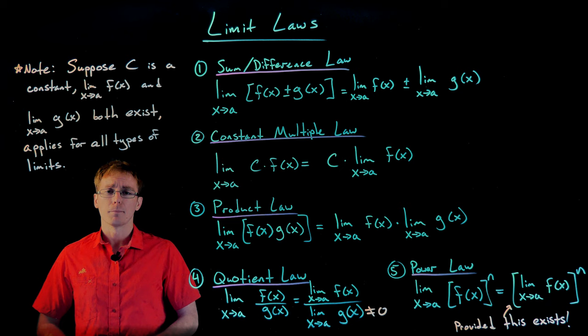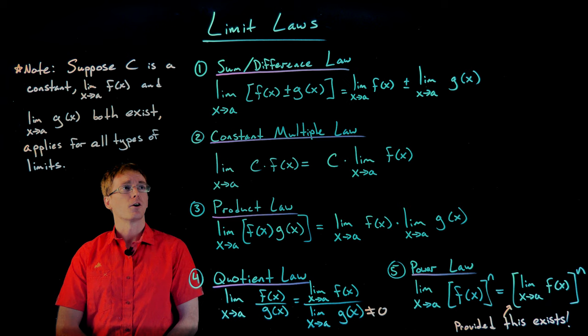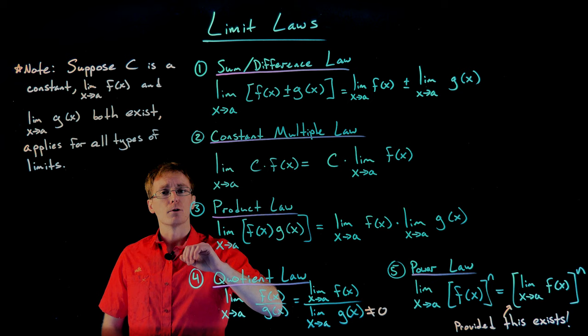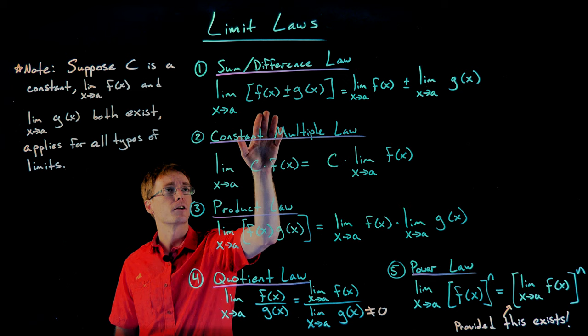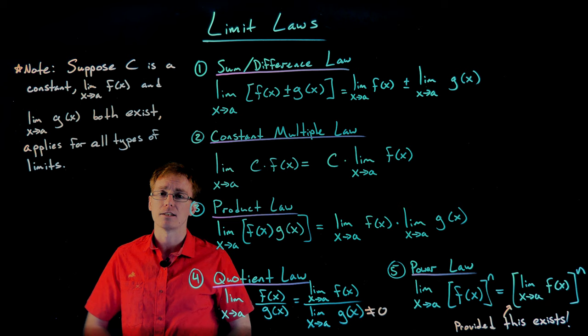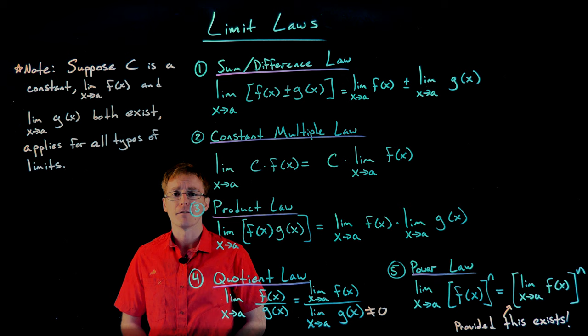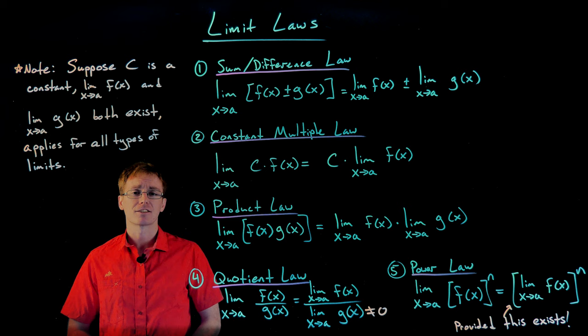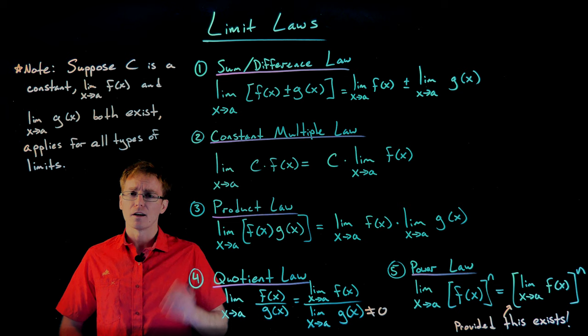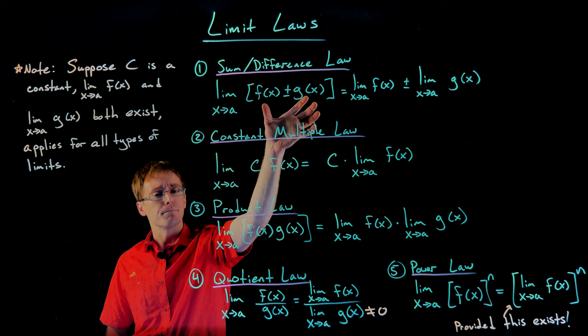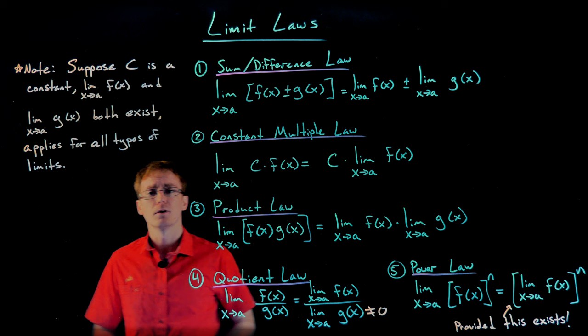The first of our limit laws is called the sum and difference limit law. It says the limit as x approaches a of f(x) plus g(x) — the sum of two functions — or the limit as x approaches a of f(x) minus g(x), the difference of two functions, can be rewritten as the limit as x approaches a of f(x) plus or minus the limit as x approaches a of g(x). What this law is saying is we're allowed to take a limit of a complicated expression and break it up into simpler smaller pieces, find the limit of each piece, and then put it back together.